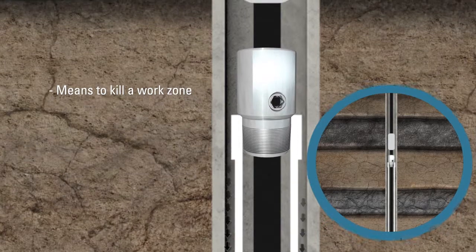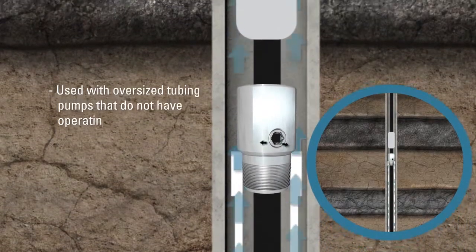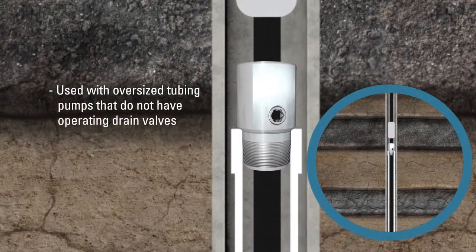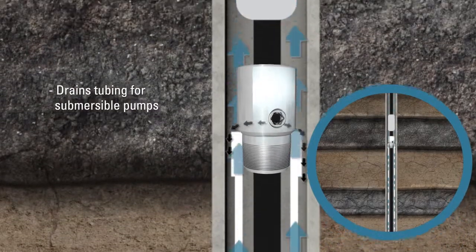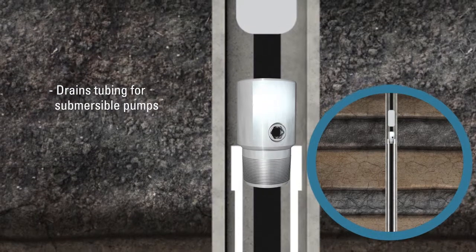Provides a means to pump down the tubing to kill a well before pulling. Used in conjunction with oversized tubing pumps that do not have operating drain valves. Drains tubing for submersible pumps equipped with a check valve and pumps in a high angle or straight hole, allowing for fluid circulation.